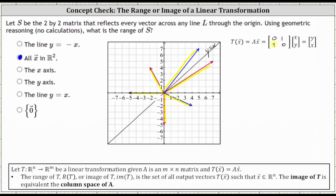Notice how the two columns are the standard basis vectors, just in a different order. Therefore, we know they are linearly independent, and the span of these two vectors gives us the column space of matrix A, which equals the range of S, or the image of T. The span of (0, 1) and (1, 0) in R2 gives all of R2, which confirms the range is all vectors X in R2. I hope you found this helpful.